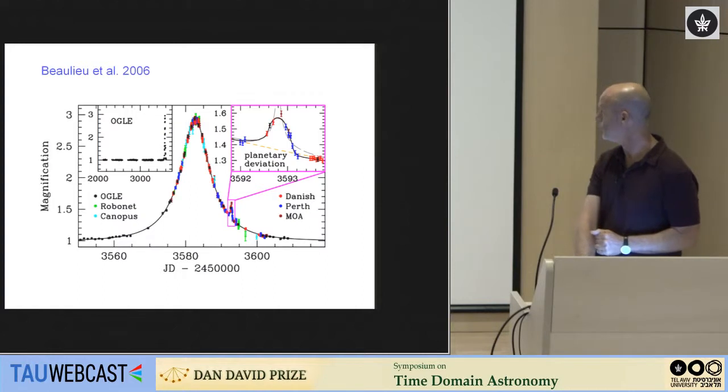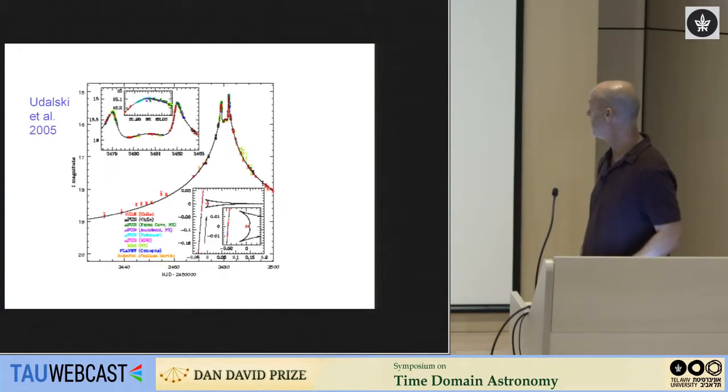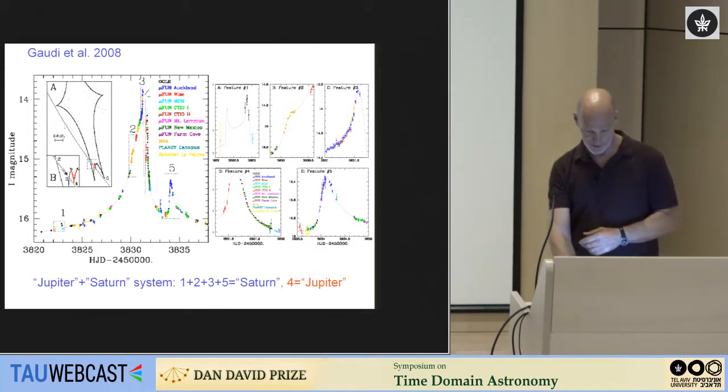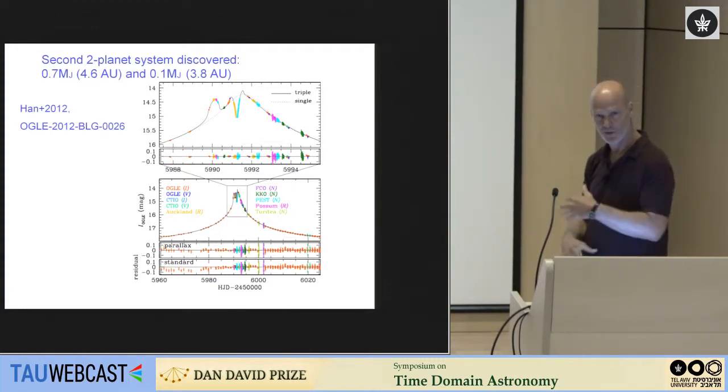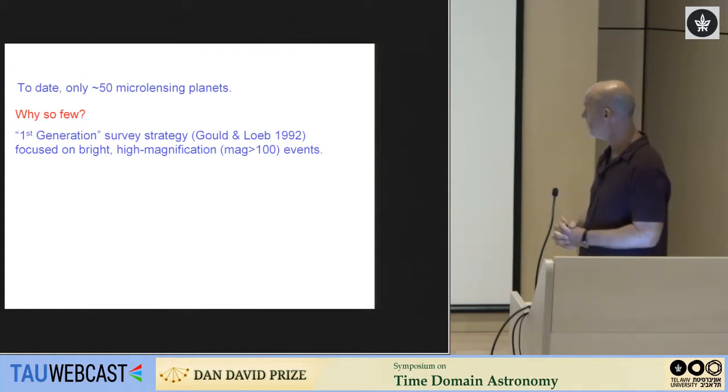And you can also see plotted there that red diamond shape, that's the caustic structure that when every time the source crosses it, you get these formally infinite magnifications that cause these spikes. And this complex structure of the light curve is actually a good thing, because that means that you can reconstruct from an event like this, when it's well observed, the parameters of the system. The physically interesting parameters that you get from microlensing are the mass ratio of your lens star and your planet, and their separation.